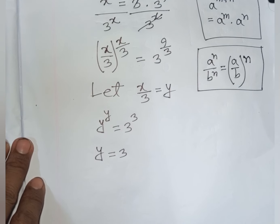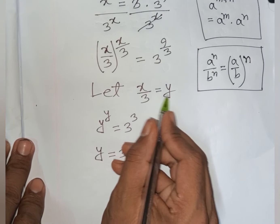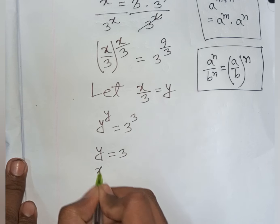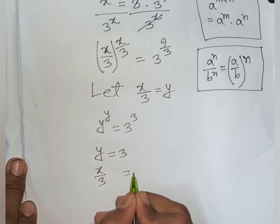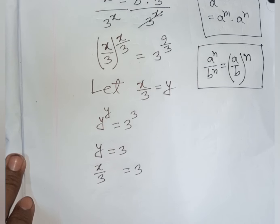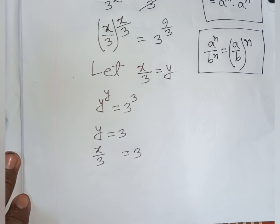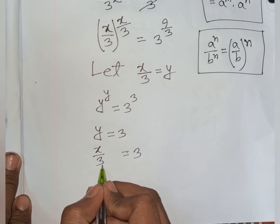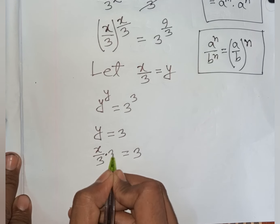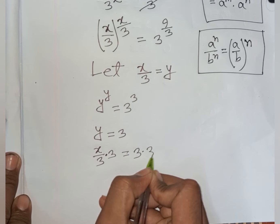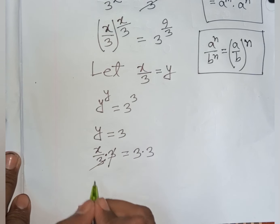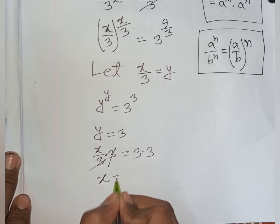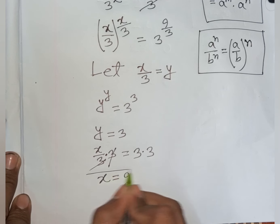Remember that x/3 was substituted by y. So y = x/3 = 3. To find x, we multiply both sides by 3. This gives x = 3 × 3 = 9.